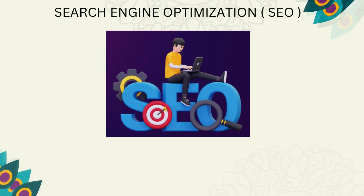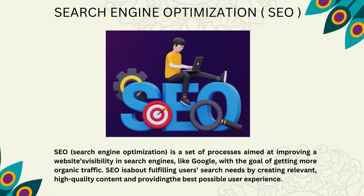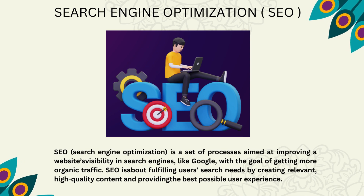Search engine optimization, or SEO, is the practice of optimizing your website to rank higher in search engine results. This involves using relevant keywords, improving site speed, and creating high-quality content that answers users' queries. On-page SEO refers to the factors you can control on your website, like content and HTML structure, while off-page SEO involves actions taken outside of your website, such as building backlinks and social signals. Effective SEO increases organic traffic, which is crucial for long-term digital marketing success.